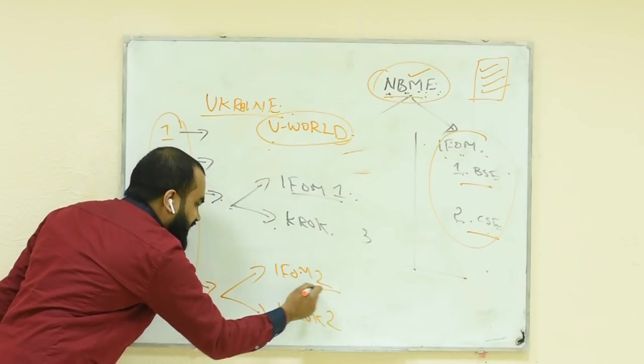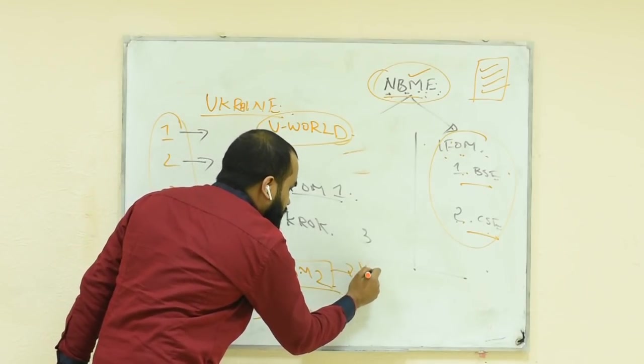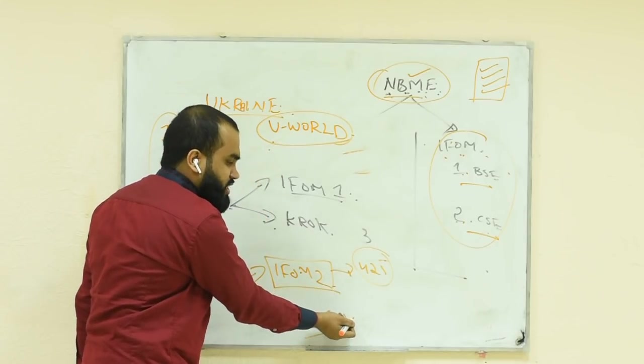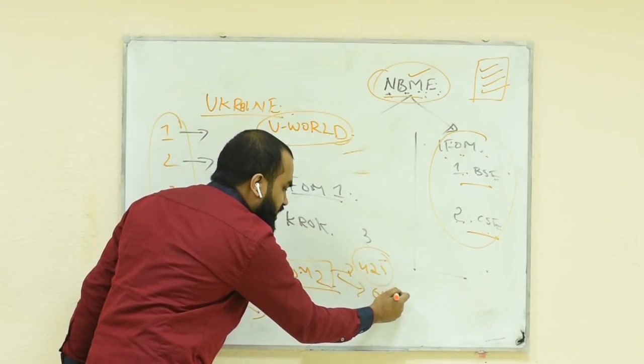In 6th year, they have two exams: now they have IFOM 2 as well as Krok 2. IFOM 2 is not compulsory, but if you clear IFOM 2 with a mark of 425, you are accepted from Krok 2 - you don't want to give Krok 2 exam. If you score more than 601, you will get a certificate from the NBME.